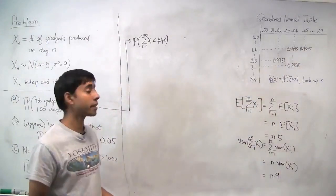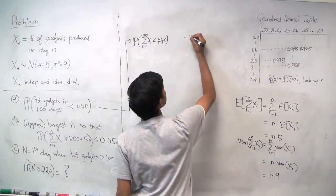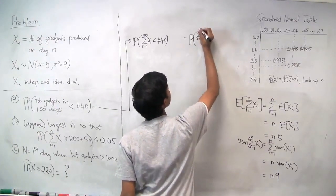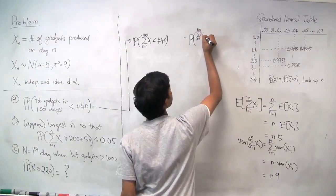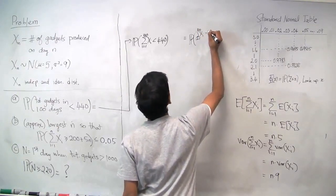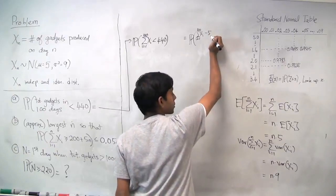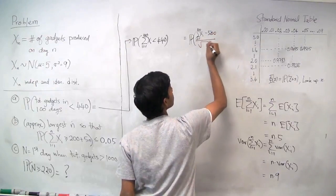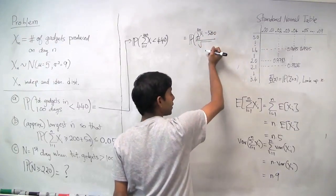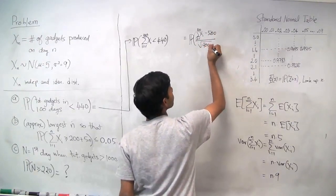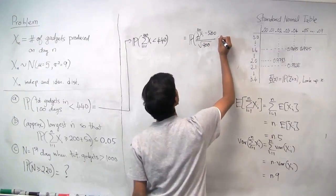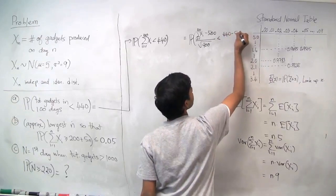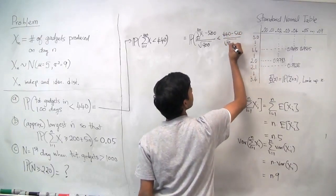Now we can standardize to get zero mean and variance 1. To do that, we take the sum of xi's and subtract by their mean, which is 5 times 100, so 500, over the square root of the variance, which is 9 times 100, so 900. That gives us less than 440 minus 500 over the square root of 900.